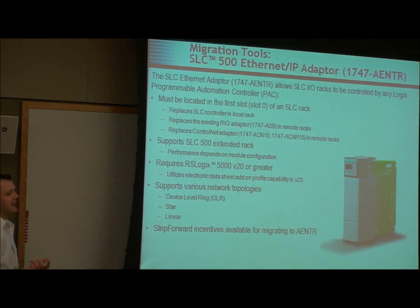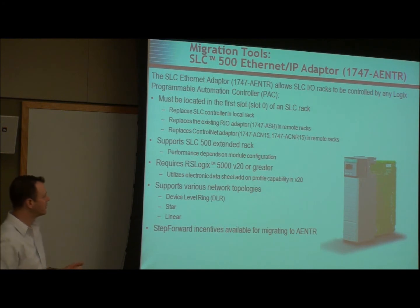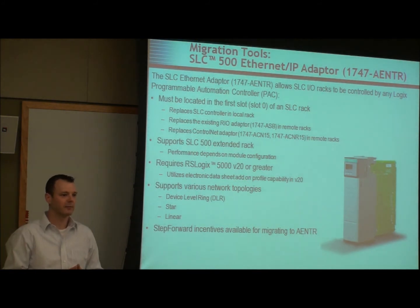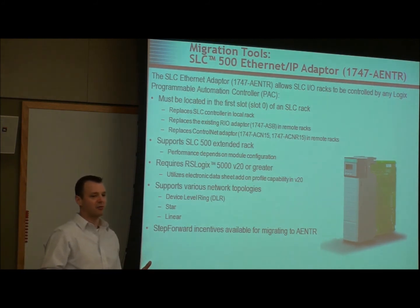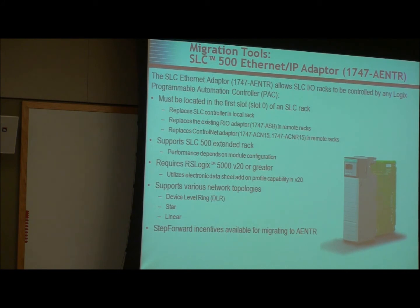This is the 1747 AEN-TR adapter. What it does is you literally pull out your SLC processor and put this in the same slot — or pull out your ASB adapter or control net adapter and put this in slot zero. Now your SLC I/O rack becomes distributed I/O for an integrated architecture system, which can be CompactLogix or ControlLogix. You don't have to replace all the I/O immediately. At some point it will become discontinued, but you can mitigate risk by doing a phased approach.